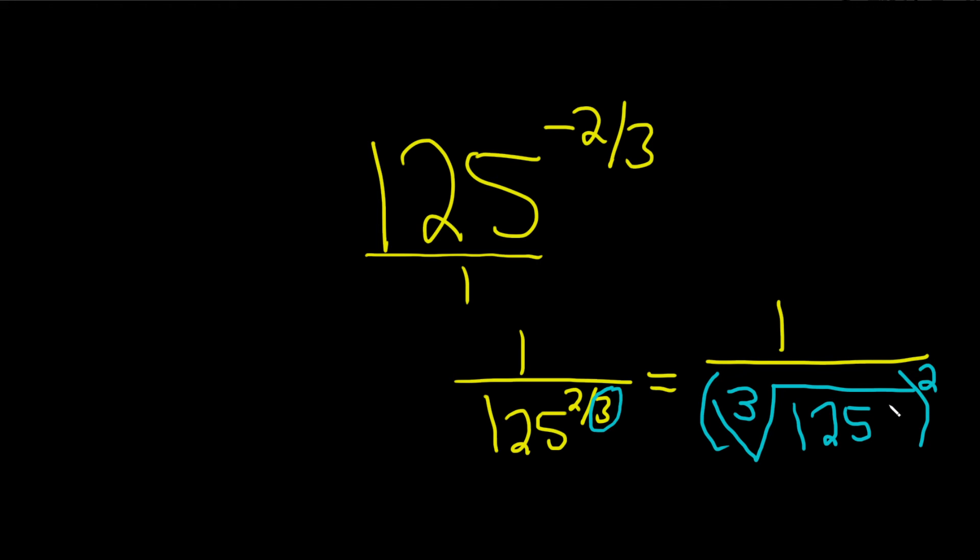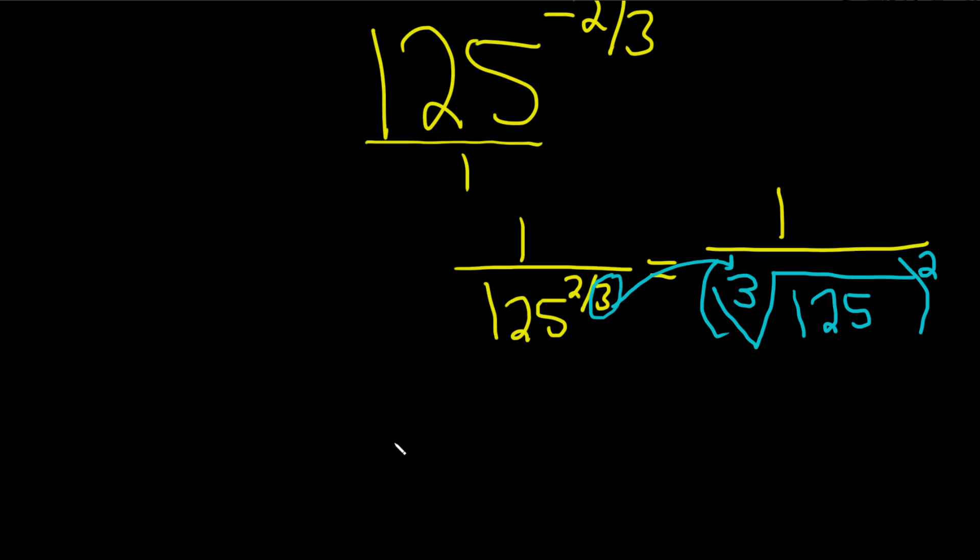You can put the two in here also, but that doesn't help. So the key is that this number goes in the little pocket. So the cube root of 125, that's 5, because 5 cubed is 125.